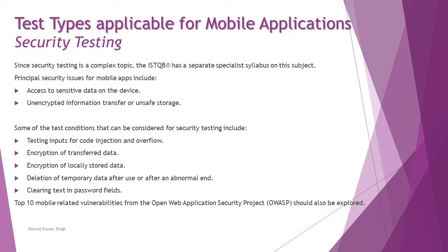Principal security issues for mobile apps include access to sensitive data on the device and unencrypted information transfer or storage. Test conditions for security testing include: testing inputs for code injection and overflow, encryption of data in transfer, encryption of locally stored data, deletion of temporary data after use or after an abnormal end, and clearing text in password fields. The top 10 mobile-related vulnerabilities from the Open Web Application Security Project (OWASP) should also be explored, as these standards define what an app should be tested for to ensure it is secured.